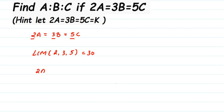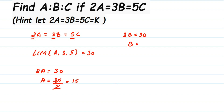So 2A equals 30 — transposing 2 to the other side, A equals 30 divided by 2, which is 15. It's simple: what do I multiply by 2 to get 30? 15. Next, 3B equals 30 — transposing 3, B equals 30 divided by 3, which is 10. And 5C equals 30 — same thing, C equals 30 divided by 5, which is 6.